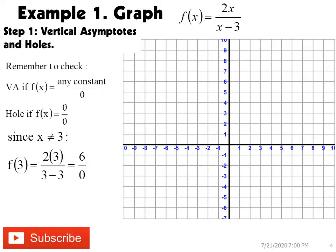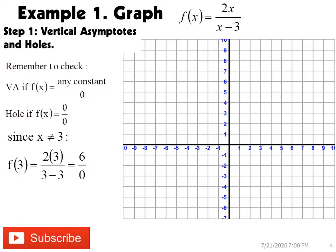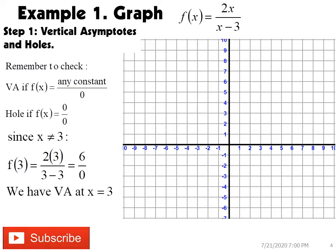Because remember, if you have any constant over zero, you have a vertical asymptote. But if you have zero over zero, you will have a hole. We can now draw our vertical asymptote at x equals three.